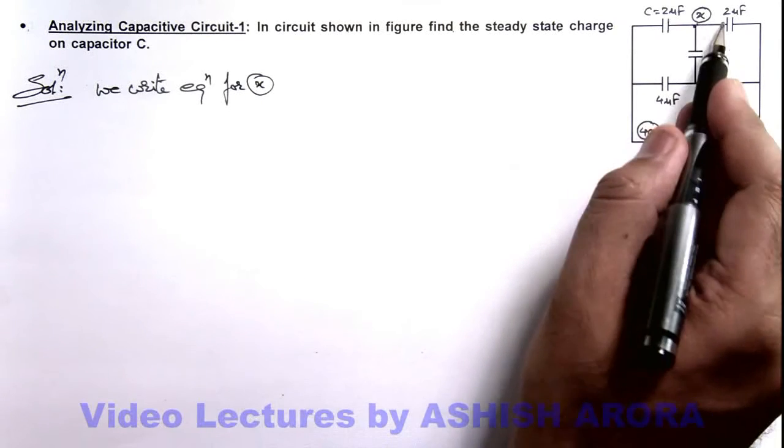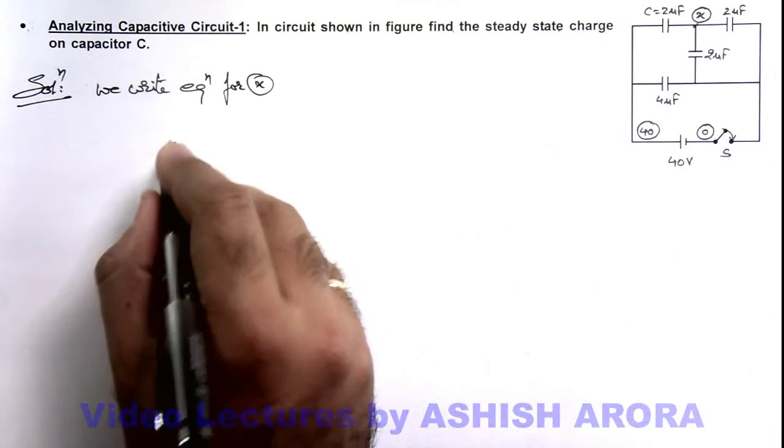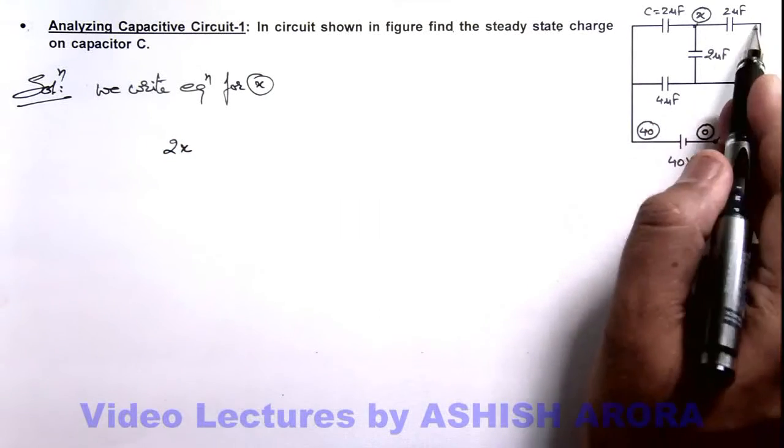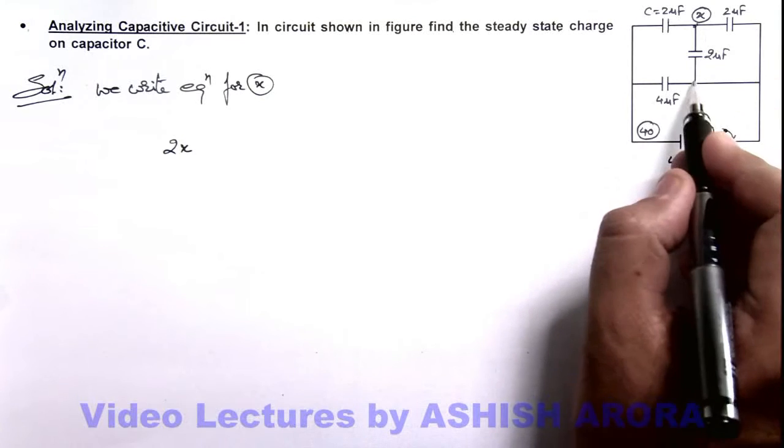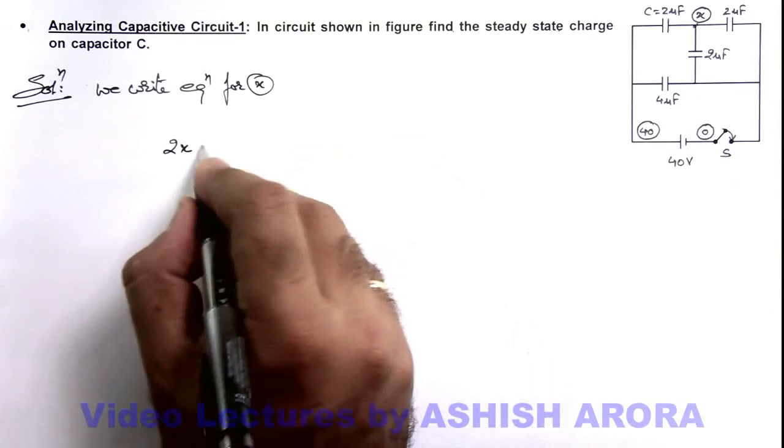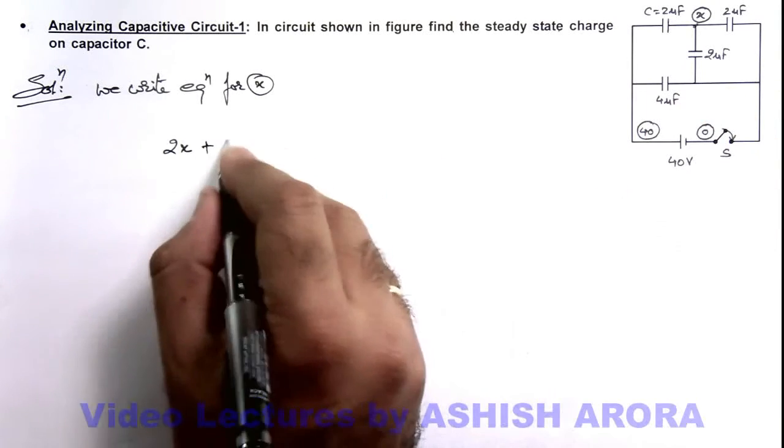So here in this situation, the equation we can write: charge on this 2 micro farad capacitor is 2x, because on the other side potential is zero. Here also potential is zero so charge on this plate will be again 2x.